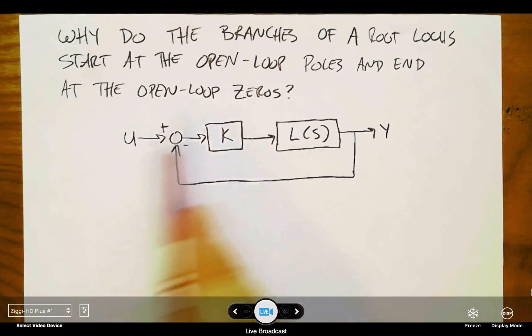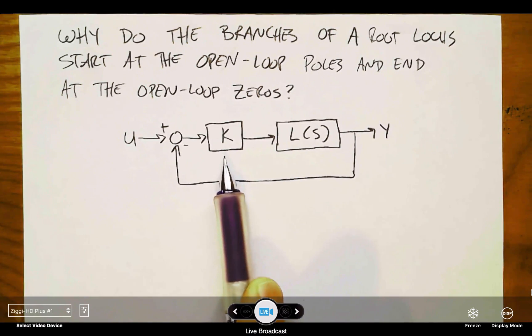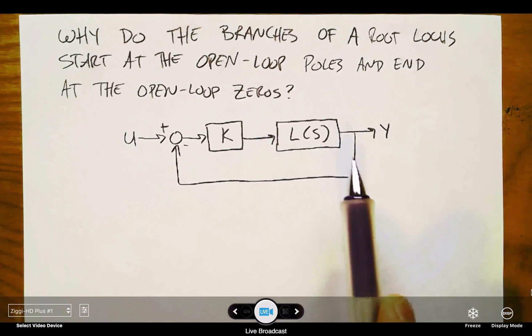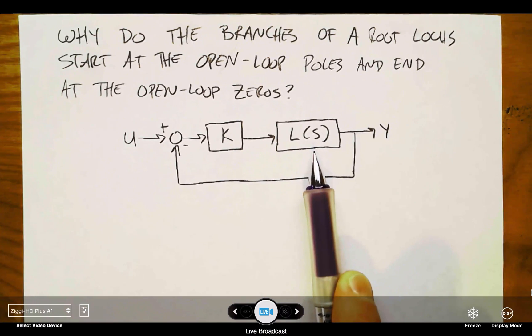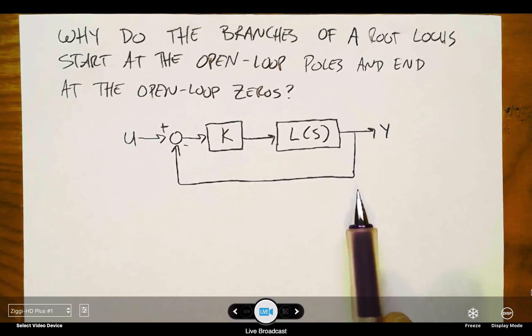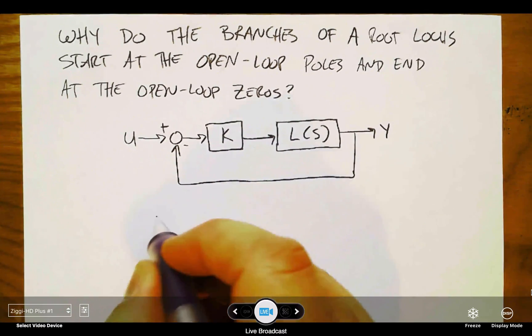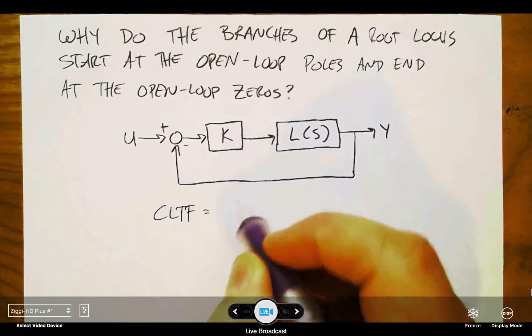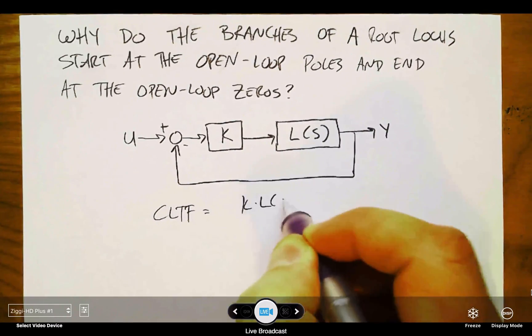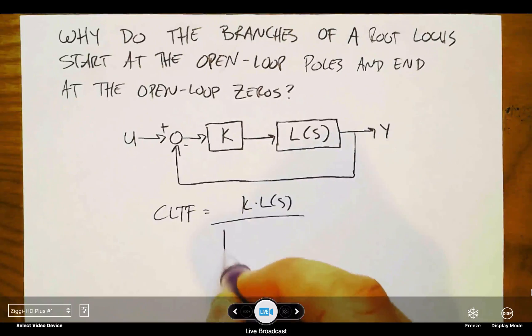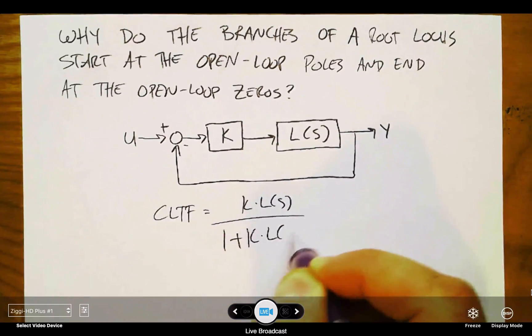Keep in mind that we always have this block diagram where we've reformulated into our gain k, that's going to vary from zero to infinity, times everything else in the feedforward loop. I'm assuming unity feedback, although you can reformulate if you had to. So assuming this, our closed-loop transfer function will be k times L(s) in the numerator divided by 1 plus k times L(s).